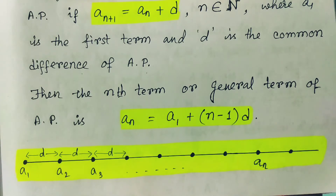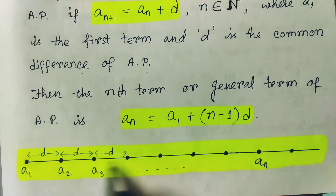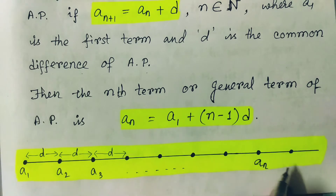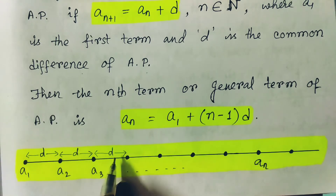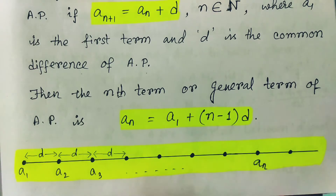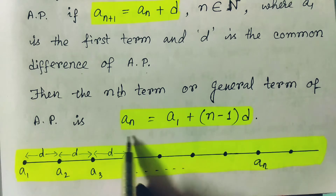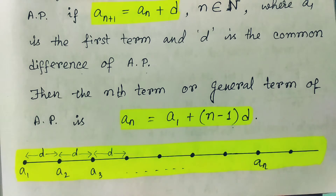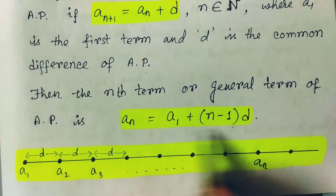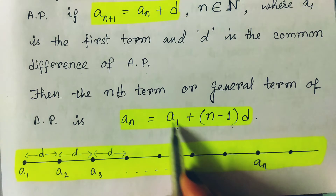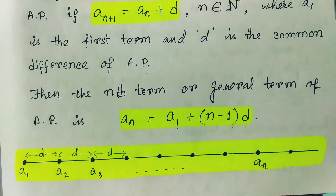If we understand this graphically, these are the points of the sequence: a1, a2, a3, and the difference between any two consecutive numbers is d. If we want to reach an, it is a1 plus all those d's required to reach up to an, and that generates this formula. This is the formula for the general term. For n equals 1, 2, 3, whatever you put, you get that particular term. Substituting n equals 1 gives a1, substituting n equals 2 gives a1 plus d. This is our general term.